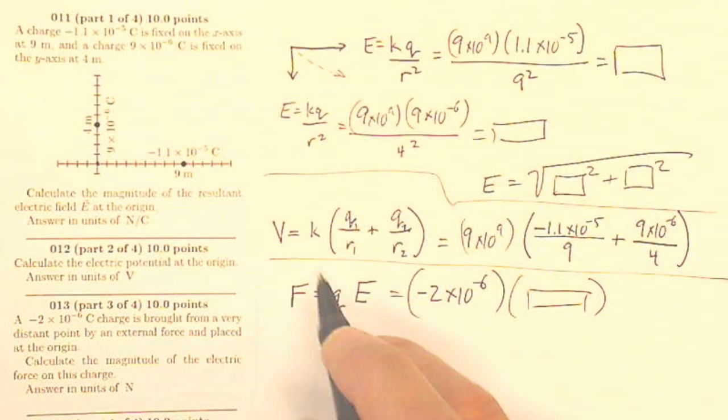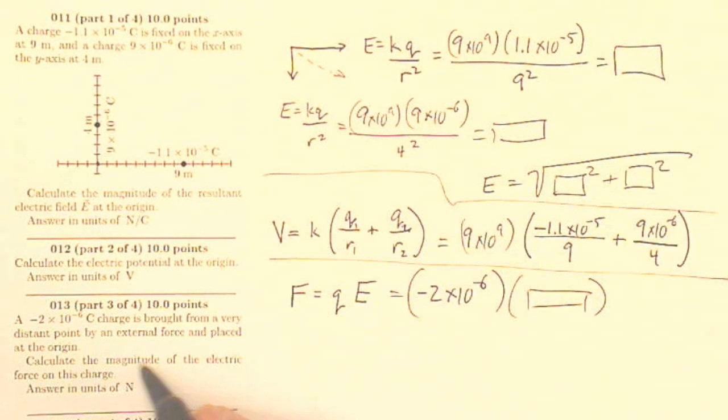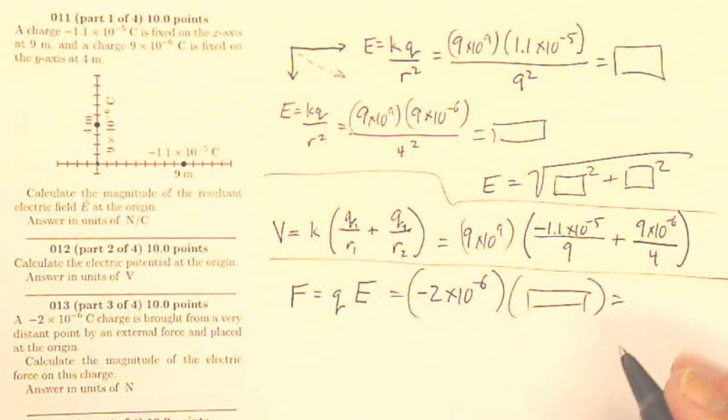And that F would be pointing in the same vector direction as that E, that net electric field. But it's just asking for the magnitude, so that's going to be a positive number. So there's F equals QE.